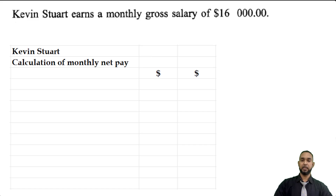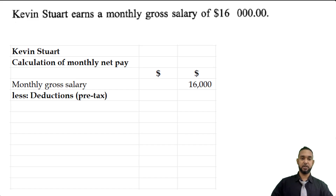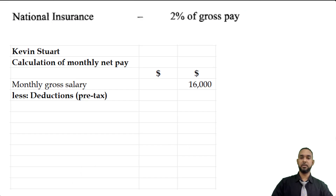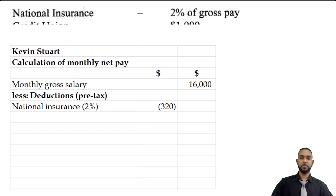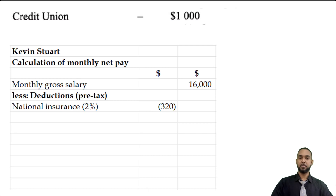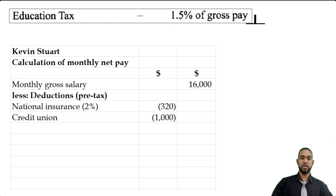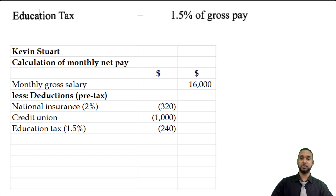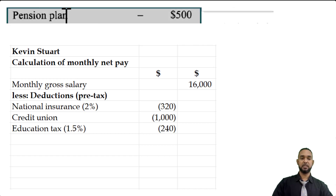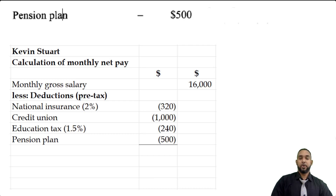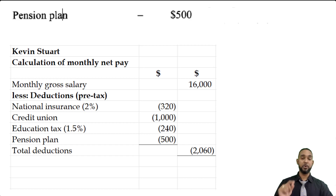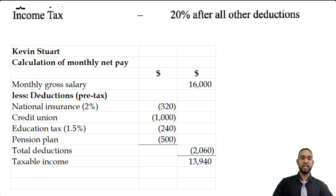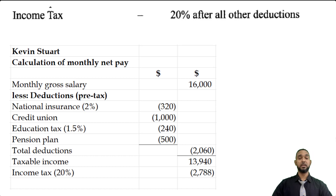Starting with monthly gross salary of $16,000, we subtract pre-tax deductions: national insurance is 2% of $16,000 = $320; credit union is $1,000; education tax is 1.5% of $16,000 = $240; pension is $500 flat. Adding those deductions gives $2,060, which we subtract from $16,000 to get taxable income of $13,940. Income tax is 20% of $13,940 = $2,788. Subtracting that gives Kevin's monthly net pay of $11,152.